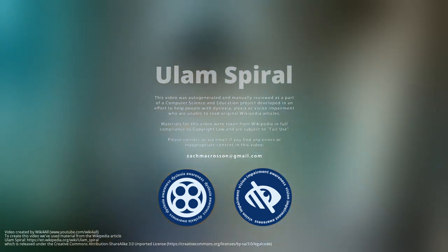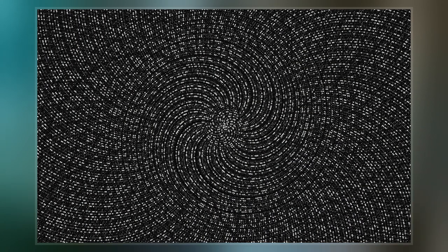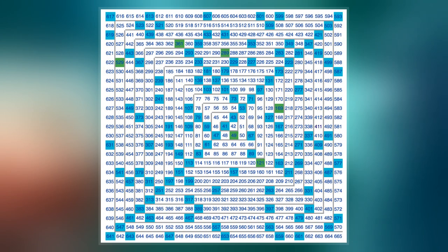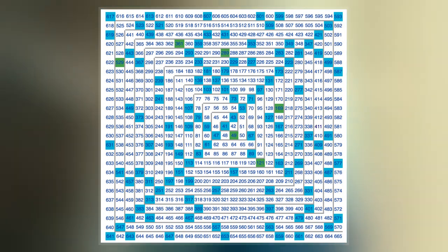The Ulam spiral or prime spiral is a graphical depiction of the set of prime numbers devised by mathematician Stanislaw Ulam in 1963 and popularized in Martin Gardner's mathematical games column in Scientific American a short time later.